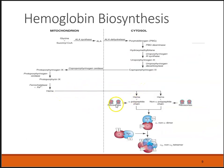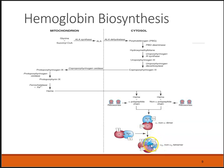Once we go back into the cytoplasm, the ribosomes make the different polypeptide proteins — the chains, either alpha, beta, zeta, delta, gamma. They will attach to the heme. The final product is the alphas and the betas being attached, with four polypeptides and four hemes capable of holding either oxygen or carbon dioxide.